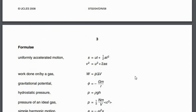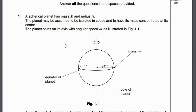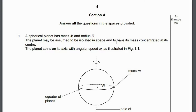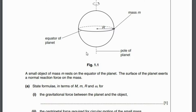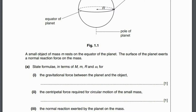The first question is a spherical planet of mass M and radius R. This is a gravitational field question and most possibly it also has circular motion in it. The planet may be assumed to be an isolated sphere in space with its mass concentrated at the center. The planet spins on its axis at angular speed omega. State the formula in terms of m, M, R, and omega for the gravitational force between the planet and the object. This follows a very simple formula: F is equal to G capital M small m divided by R squared.